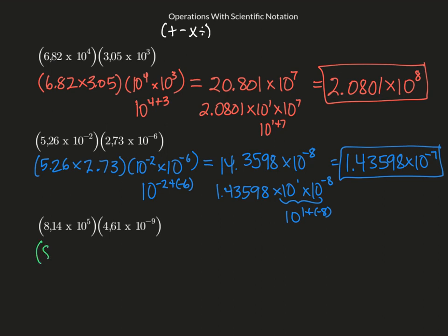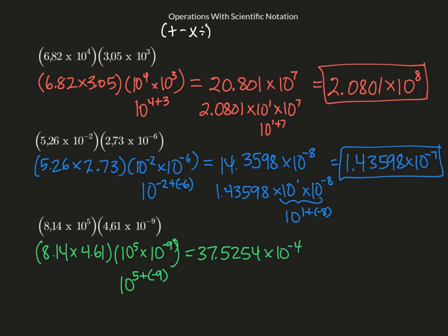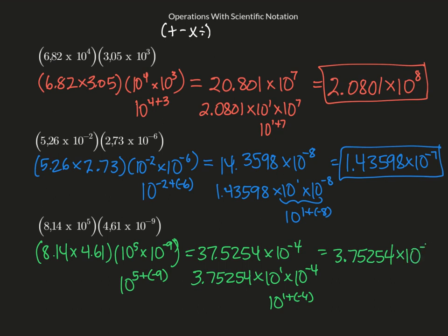I'm going to commute them: 8.14 times 4.61, and 10 to the 5th times 10 to the negative 9. With the same base, I add the exponents — 5 plus negative 9 — and use my calculator for the first part. I get 37.5254 times 10 to the negative 4. My mantissa needs to be changed to 3.75254 times 10 to the 1st, times 10 to the negative 4th. Adding those exponents gives a final answer of 3.75254 times 10 to the negative 3.